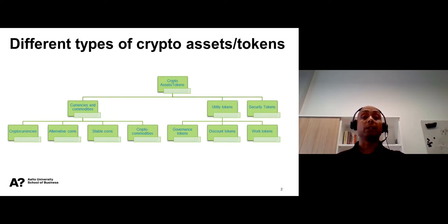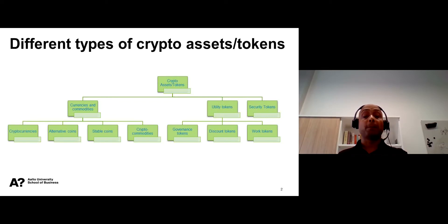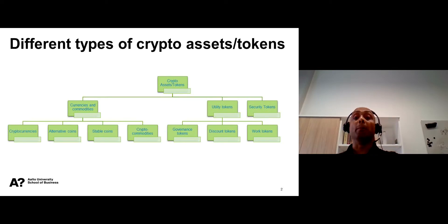These three categories are: cryptocurrencies and commodities, utility and security tokens. Cryptocurrencies are standard currencies used for making or receiving payments on the blockchain.